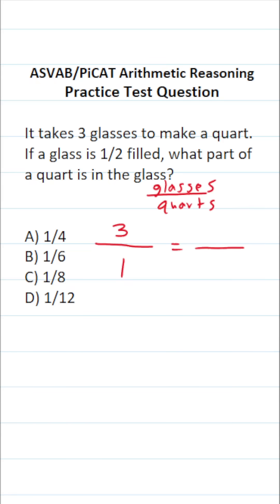As you fill in this right-hand side of this proportion, you want to follow this. So if a glass is one half filled, this is referring to glasses. We put glasses in our numerator. What part of a quart is in the glass? That's unknown, so we'll call it x.